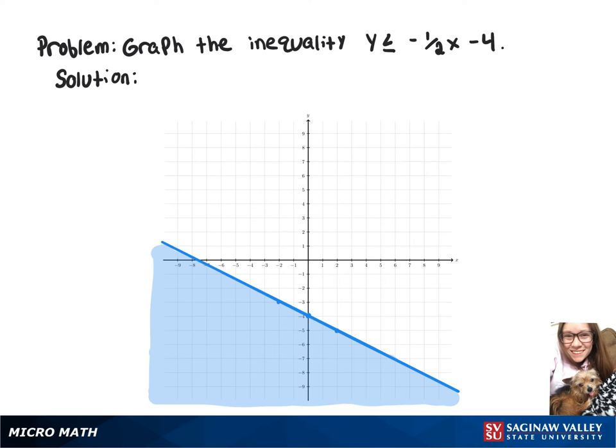And if we were to pick an example point, we'll do negative 2, negative 4. So that would give us negative 4 is less than or equal to negative 1 half times negative 2 minus 4, which then gives us negative 4 is less than or equal to negative 3, which is a true statement.